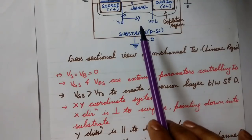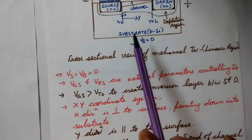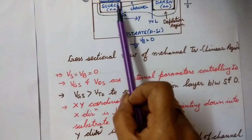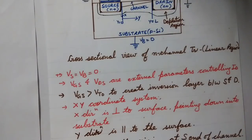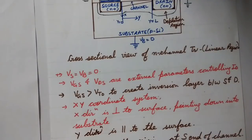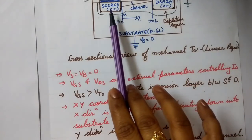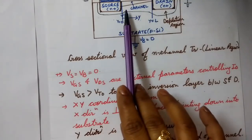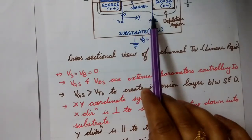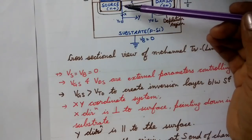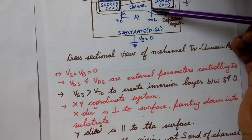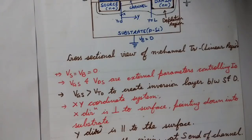In this diagram we have taken an XY coordinate system. The X direction is perpendicular to the surface, pointing downwards into the substrate, whereas the Y direction is taken as parallel to the surface. The channel lying between source and drain has length L. The Y direction starts from the source, so Y equals zero at the source end and Y equals L at the drain end.